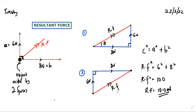We want to find the value of this resultant force. Since we have the two other values, we can use the Pythagorean theorem: C² = A² + B². So resultant force² = 6² + 8². Solving this gives us the answer. This is the method to find the resultant force.